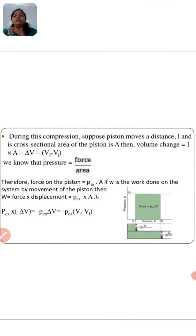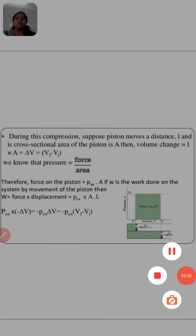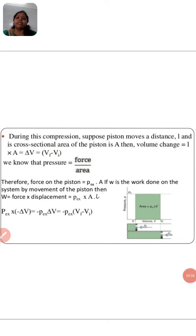During the compression, suppose the piston moves a distance l and the cross-sectional area of the piston is A, then the volume change is l multiplied by A, so the value is del v. Del v equals v_f minus v_i. We know that pressure is force upon area. Therefore, force on the piston equals p_ex multiplied by A. If w is the work done on the system by the movement of the piston, then w equals force times displacement, p_ex times A times l. This graph shows this very clearly.